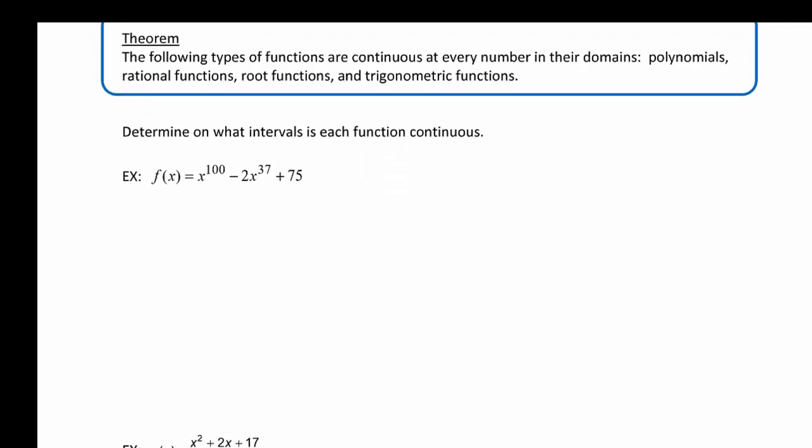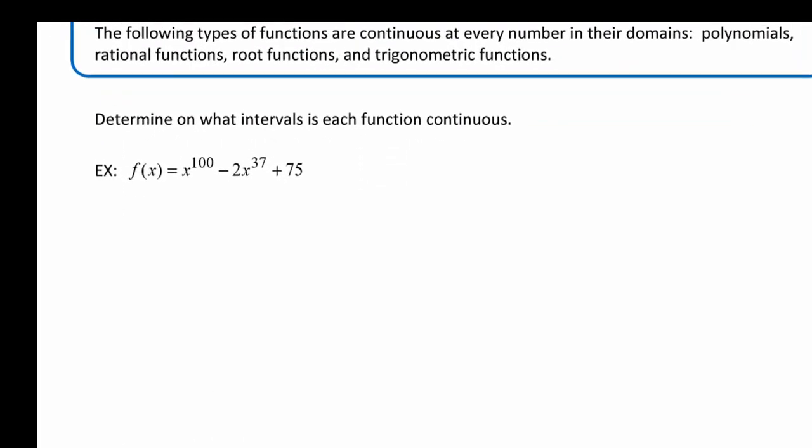So let's determine on what intervals is each function continuous. Well, f(x) equals x to the 100 minus 2x to the 37 plus 75.